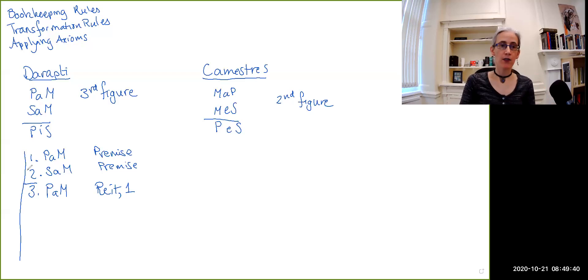But the next thing that I'm going to do is actually apply one of the transformation rules. So we have two universal affirmative claims. These can both be accidentally converted. I'm not going to accidentally convert line three—if I had wanted to do that, then instead of reiterating line one, I could have just accidentally converted it. Instead, I'm going to do accidental conversion on line two.